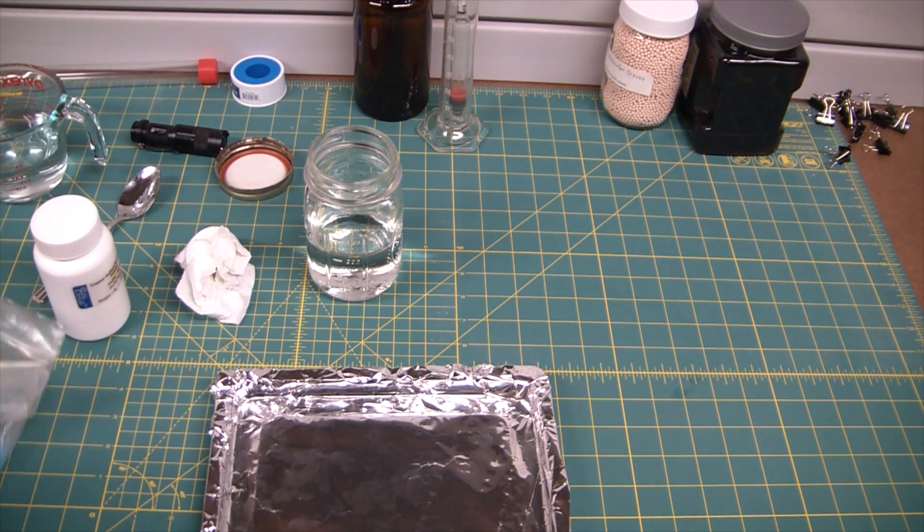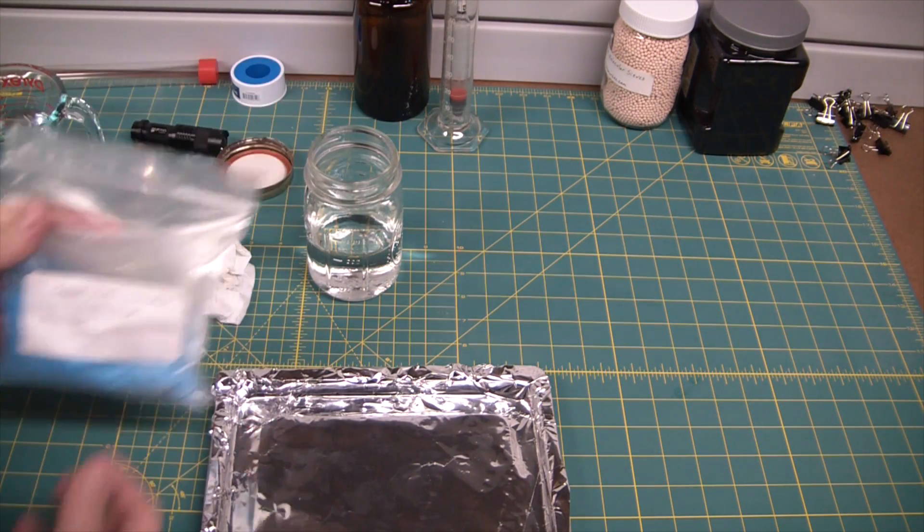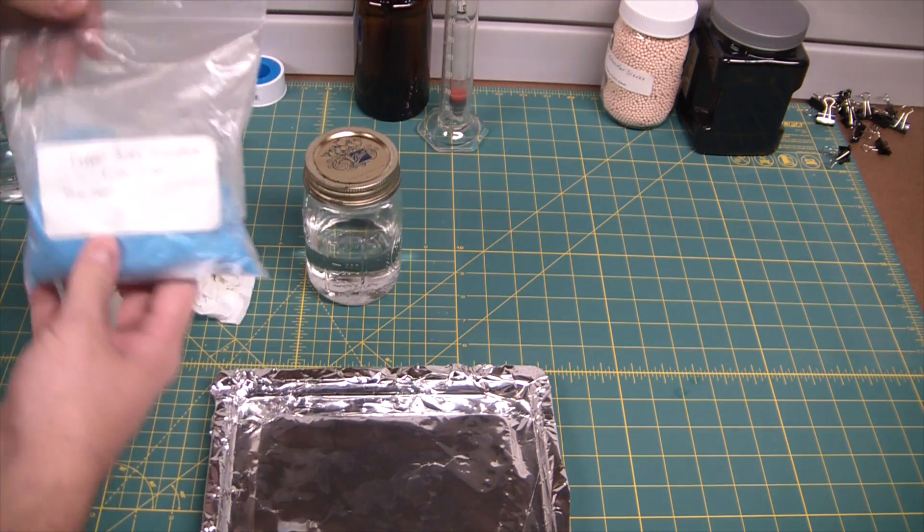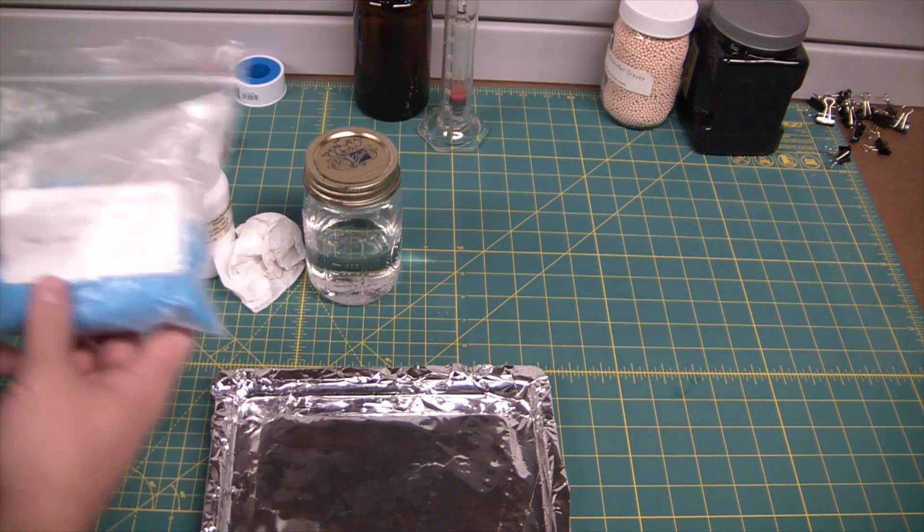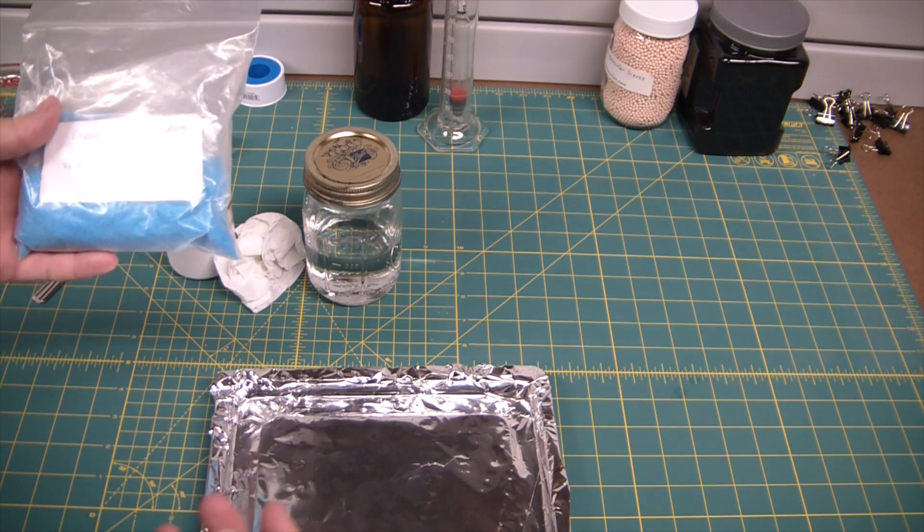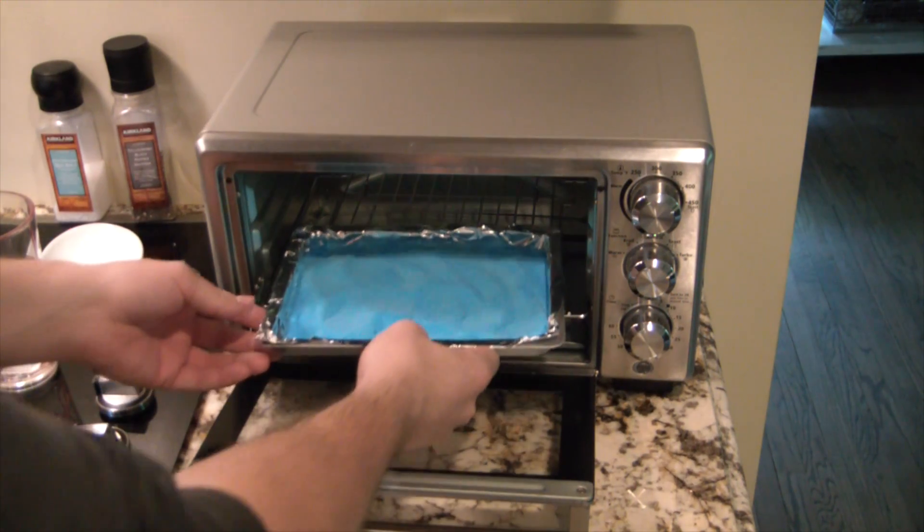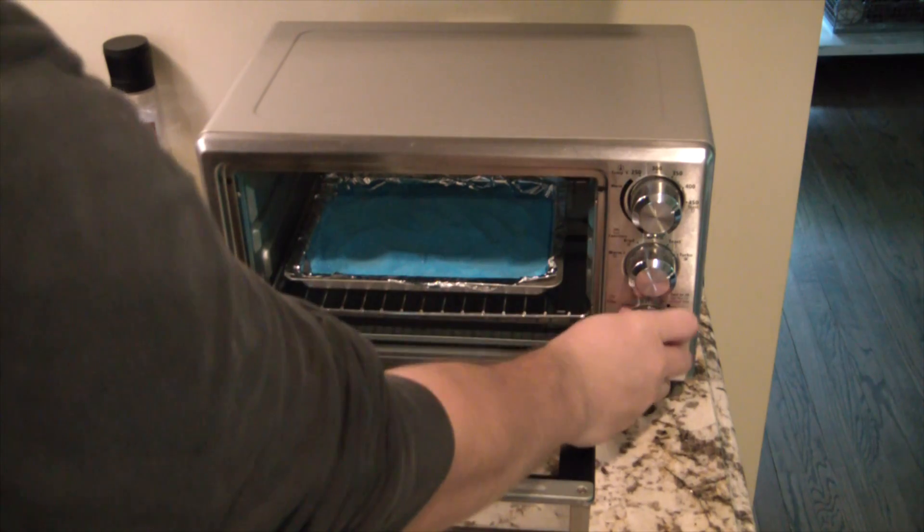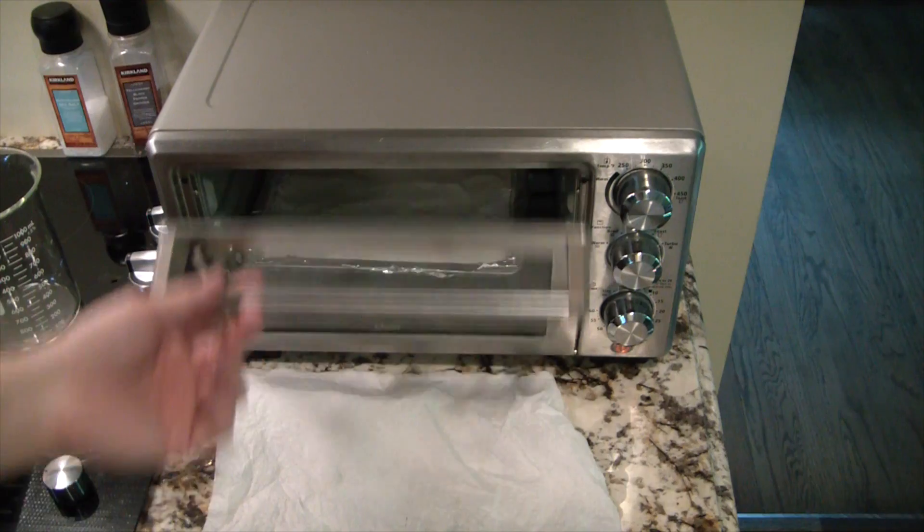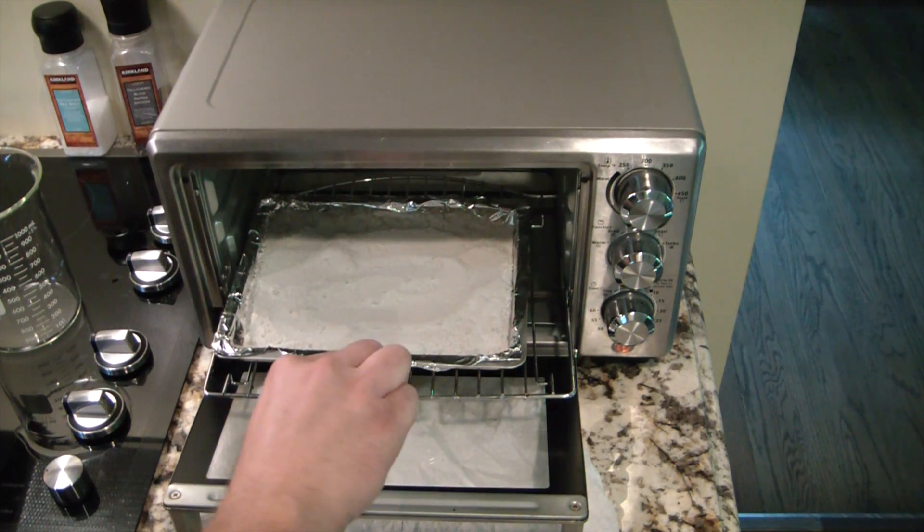But what we can do instead is chemically dehydrate it and suck the water out of it to fully separate it. And to do that I'm gonna be using some copper sulfate, and this is currently pentahydrate. What we're gonna do is borrow the wife's little toaster oven, get this to become anhydrous copper sulfate. So we're gonna basically heat the water out of it, and at that point it's gonna be looking to grab water again very quickly.